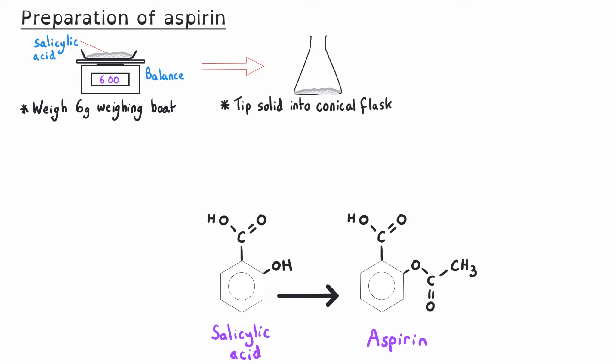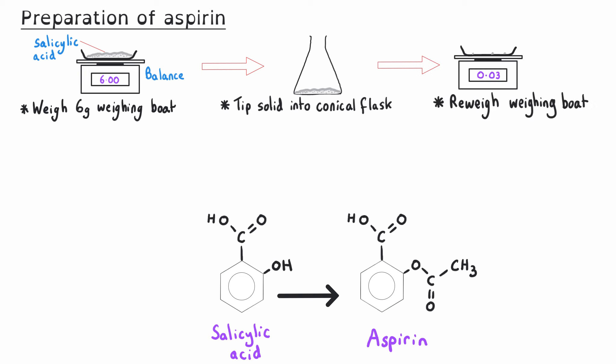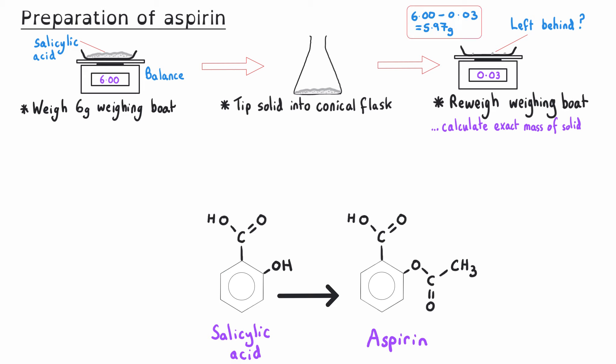Before we start the reaction, we need to make sure we know exactly how much solid has been transferred into the conical flask. So we re-weigh the weighing boat to see if we've left any salicylic acid behind. For example, if 0.03 grams were left behind, this second measurement allows us to weigh by difference and find that we've actually only added 5.97 grams of salicylic acid. This gives us a more exact mass of solid transferred into the conical flask.